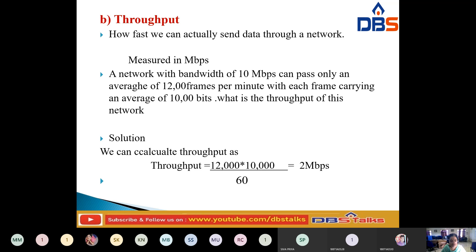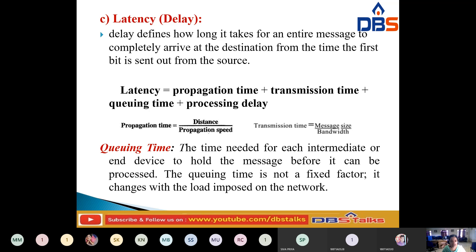Next, coming to latency, also called delay. Latency defines how long it takes for an entire message to arrive at the destination from the time the first bit is sent from the source. Latency is made of four components: propagation time, transmission time, queuing time, and processing delay. The formula is: Latency = Propagation Time + Transmission Time + Queuing Time + Processing Delay.